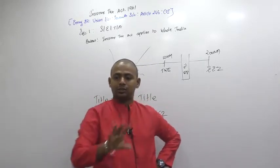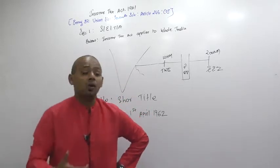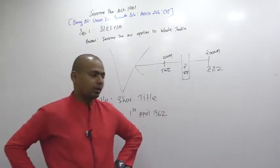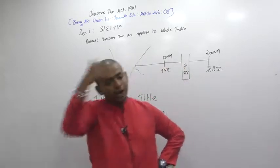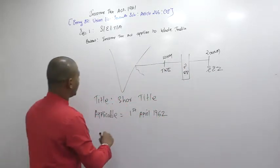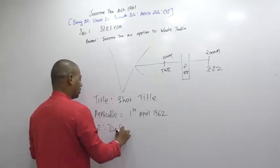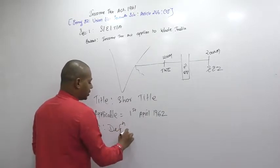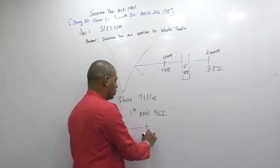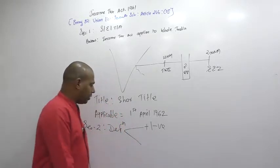In Section 2, definitions are written. You open any act, Section 2 is the definition section. There are two types of definitions — positive and negative definitions. How do you identify a positive and a negative definition? Please understand.